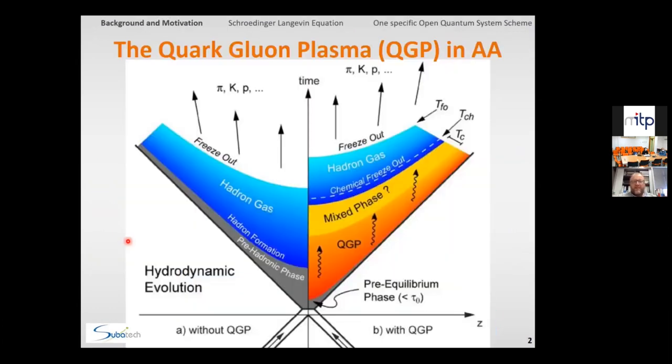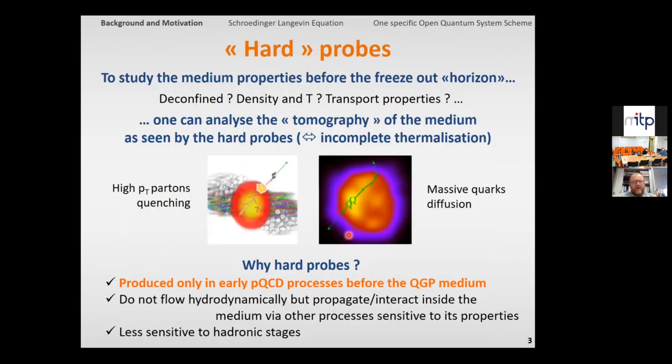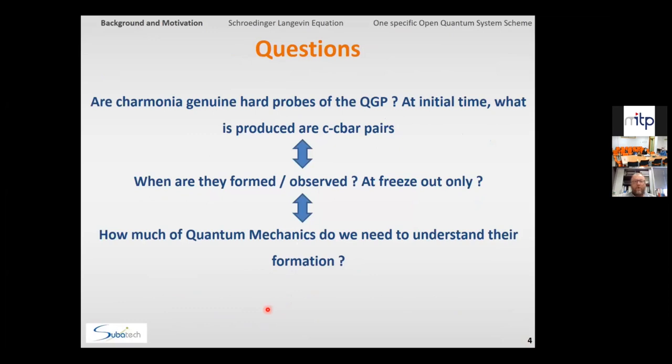So this is typically the medium we would like to probe. And of course, what we would like to probe is really the QGP that is deep here before freeze-out. And when people start introducing hard probes and quarkonia, they explain why it is interesting to have hard probes. And of course, this is true for jets. This is true for heavy quarks themselves. But is it true for quarkonia?